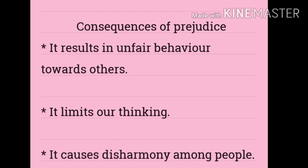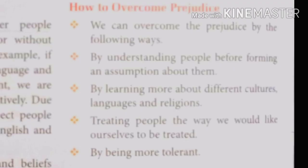Now, how to overcome prejudice? How can we get out of this situation? We can overcome prejudice by the following ways. The first one is by understanding people before forming an assumption about them. If any of your friends belongs to a different state and he or she is speaking a different language, or following a different religious belief, or belongs to a different religion, first we should understand the feeling of the people. We should not discriminate or have prejudice against that person or friend.